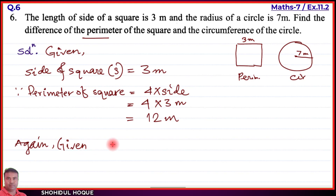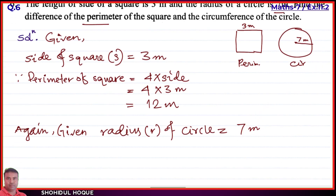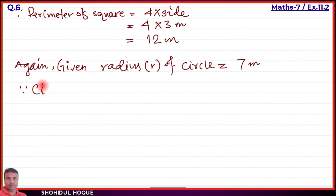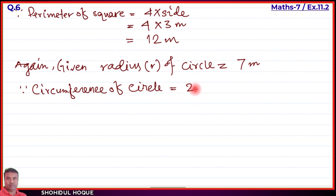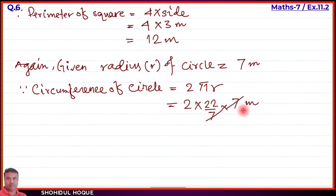Given: radius of circle equals 7 meters. Circumference of circle equals 2πr. So 2 into pi, using pi equals 22 by 7, into r value 7 meters. The 7 cancels, giving 2 into 22 equals 44 meters. The circumference of the circle is 44 meters.